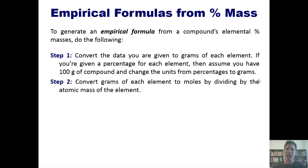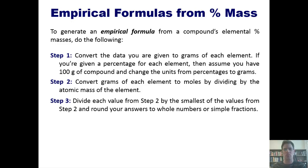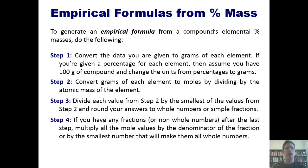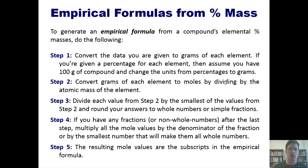Next, convert grams of each element to moles by dividing by the atomic mass of the element. Next, divide each value from step two by the smallest of the values from step two, and then round your answers to whole numbers or simple fractions. Next, if you have any fractions or non-whole numbers after the last step, multiply all the mole values by the denominator of the fraction or by the smallest number that will make all of them into whole numbers. And then last, the resulting mole values are the subscripts in your empirical formula. Okay, I realize that all of this stuff is a bunch of convoluted nonsense, but I promise it will make sense as we take a look at some problems.